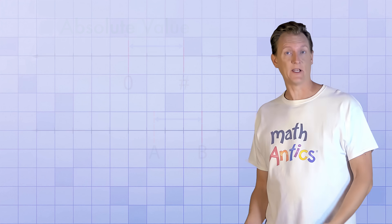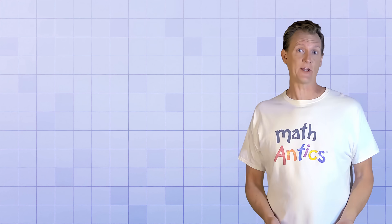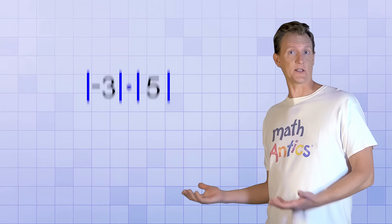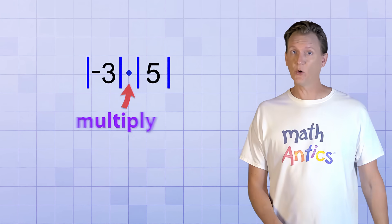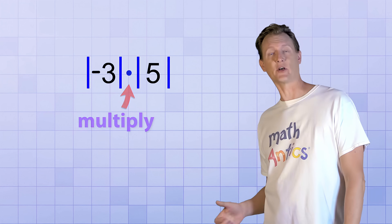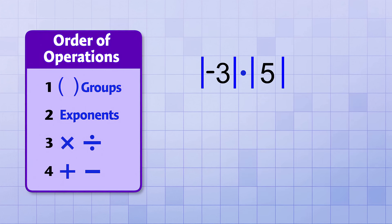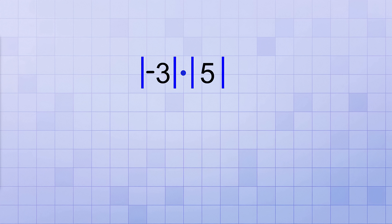The last thing I want to show you in this video is how to handle a couple situations involving absolute value that you might encounter on tests when evaluating mathematical expressions. For example, what if you're asked to evaluate this expression involving absolute values? We learned how to multiply integers in the last video, but now these integers are inside absolute value signs. So what do we do? Well, when it comes to order of operations, absolute value signs are similar to parentheses, which means that you need to take care of them first before you start working on the other arithmetic operations. So in this problem, before we can multiply the integers, we need to take the absolute value of the numbers first. The absolute value of negative 3 is 3 and the absolute value of 5 is 5. So the problem simplifies to 3 times 5 which is 15.